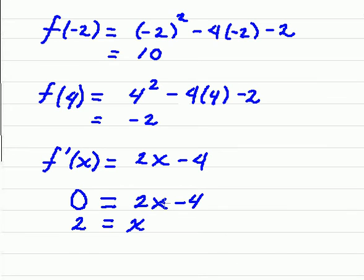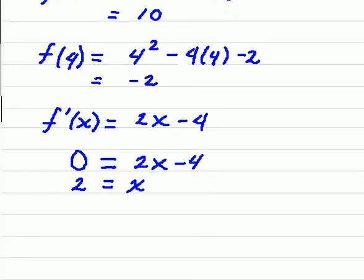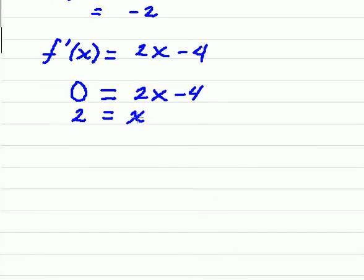You plug 2 in, you get 2 times 2 is 4, and 4 minus 4 is 0. So now that we've found this, you want to take that 2 and plug it into the function. So 2 squared minus 4 times 2 minus 2. And that's going to leave us with negative 6.